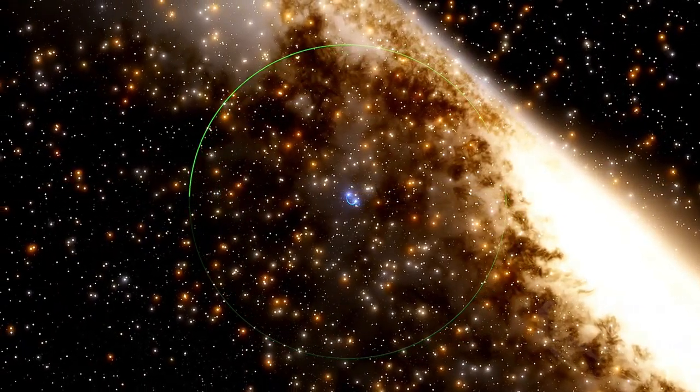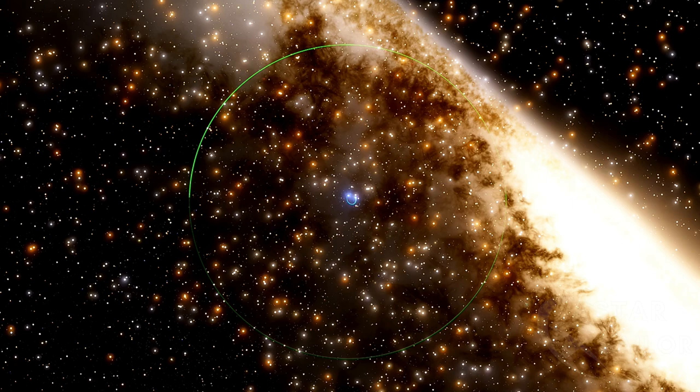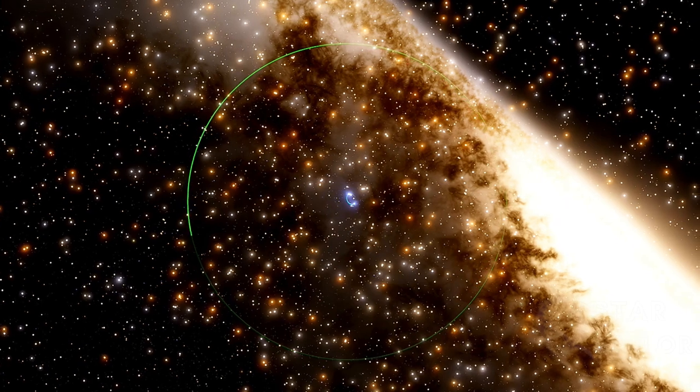Methuselah is located 2.1 billion miles from the binary system, 23 times farther than the distance between Earth and the Sun. It completes an orbit around the stars every 100 Earth years.